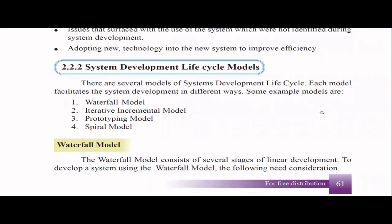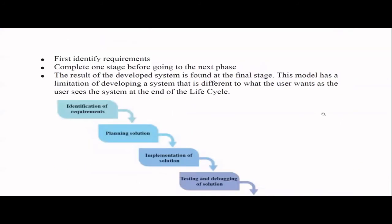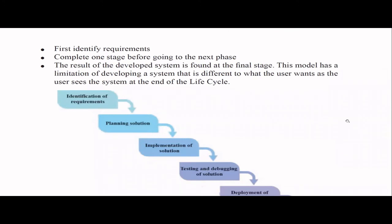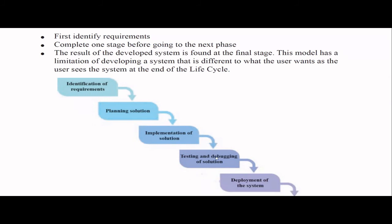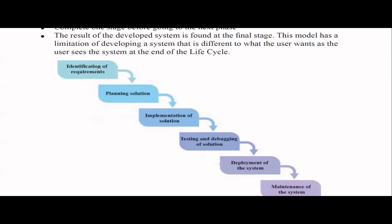The first is the waterfall model. In this model, the steps — identification of requirements, planning/designing, implementation, testing and debugging, deployment, maintenance — follow one after the other sequentially. You identify all requirements, then design, then implement; after implementation you never get new requirements again. You don't change the initial set of requirements. You implement, test, deploy, deliver to the customer, and maintain. It's like a waterfall — that's why we call it the waterfall model.